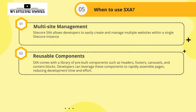Second, reusable components. SXA comes with a library of pre-built components such as headers, footers, carousel, and content blocks. Developers can leverage these components to rapidly assemble pages, reducing development time and effort. If you can work with the default out-of-box components and do not need heavy customization, then SXA is a good choice. But if you need a lot of customization, SXA may not be the right option.